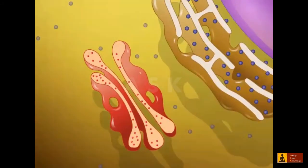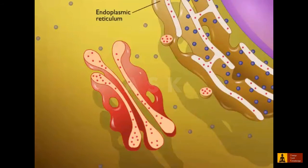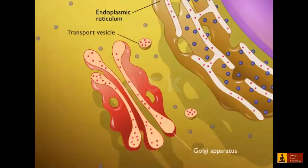The hydrolytic enzymes that degrade proteins, nucleic acids, lipids and carbohydrates are formed in the endoplasmic reticulum and then transported to the Golgi apparatus by transport vesicles.